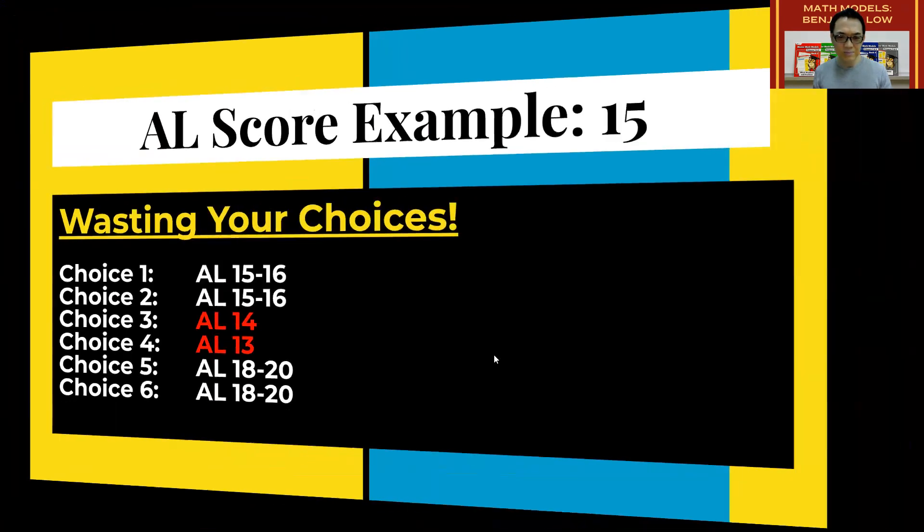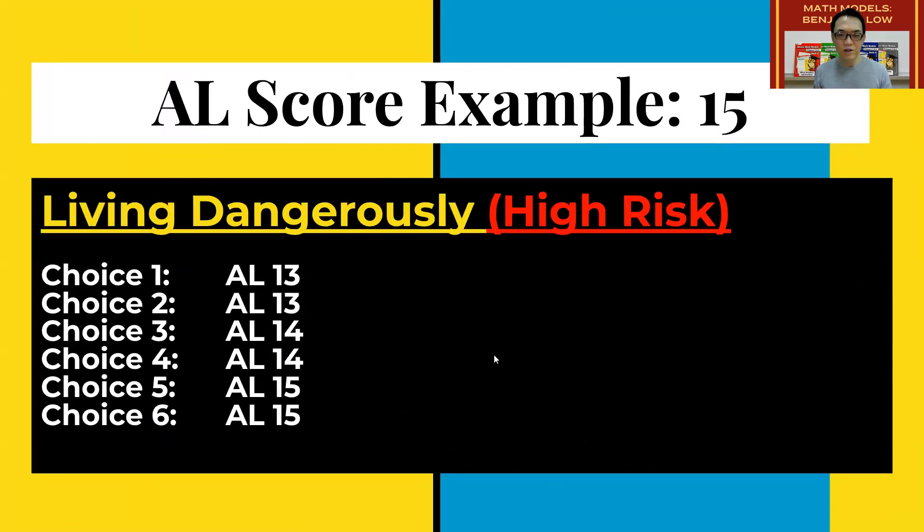And then after that, this one is called living dangerously high risk. 13, two points below. 14, one point below. 15, your score. Now, if you don't get any of this, you will end up in a school that is not among your choices. So this is very, very risky.